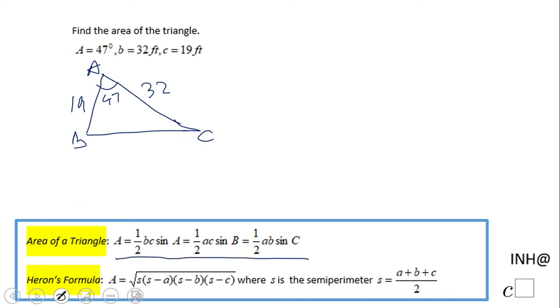We're going to use the one that has b and c, which is right here. We're going to have A equals one half b times c times the sine of A. So what do we have here? One over two, b is 32, c is 19, and sine of 47.